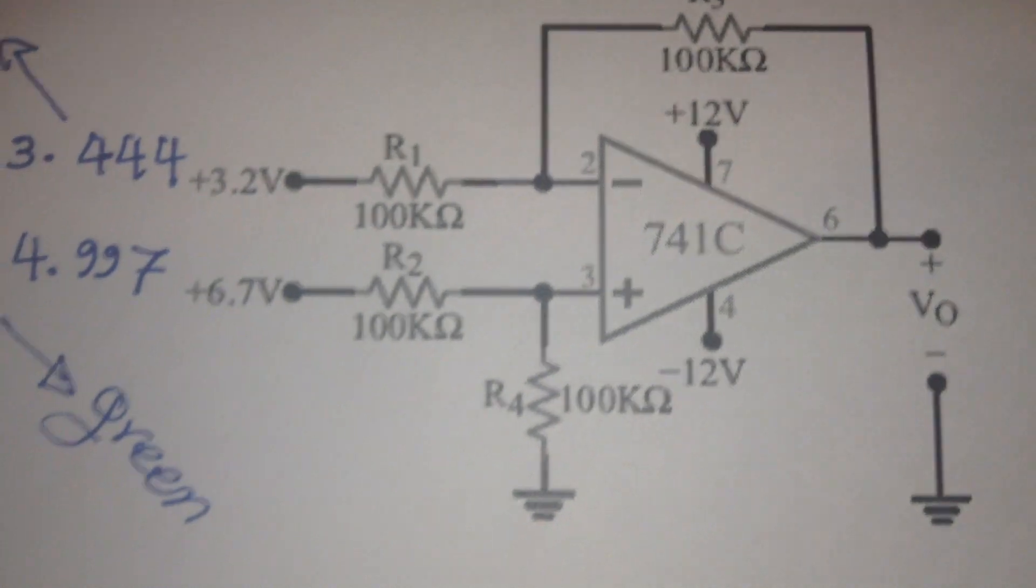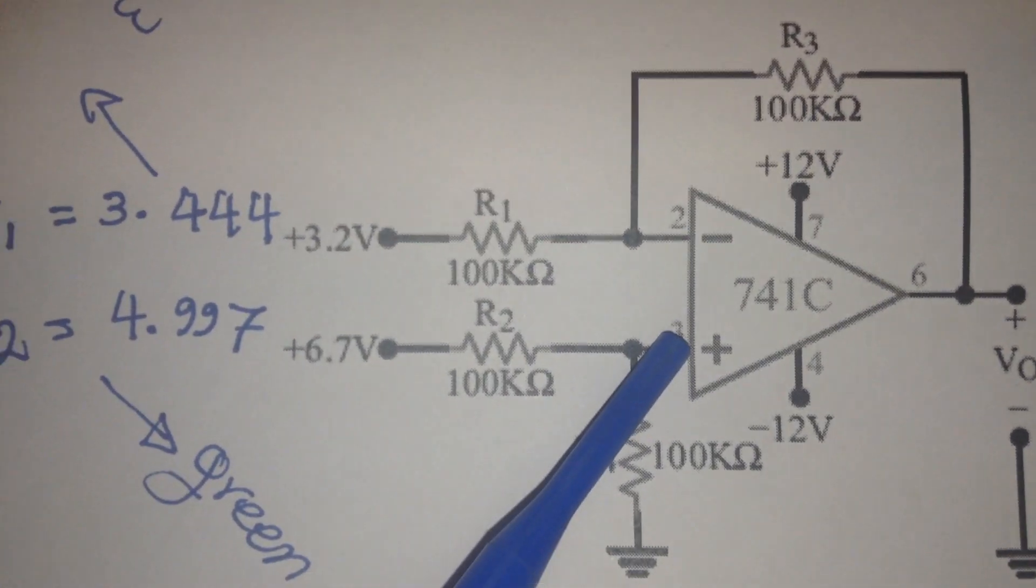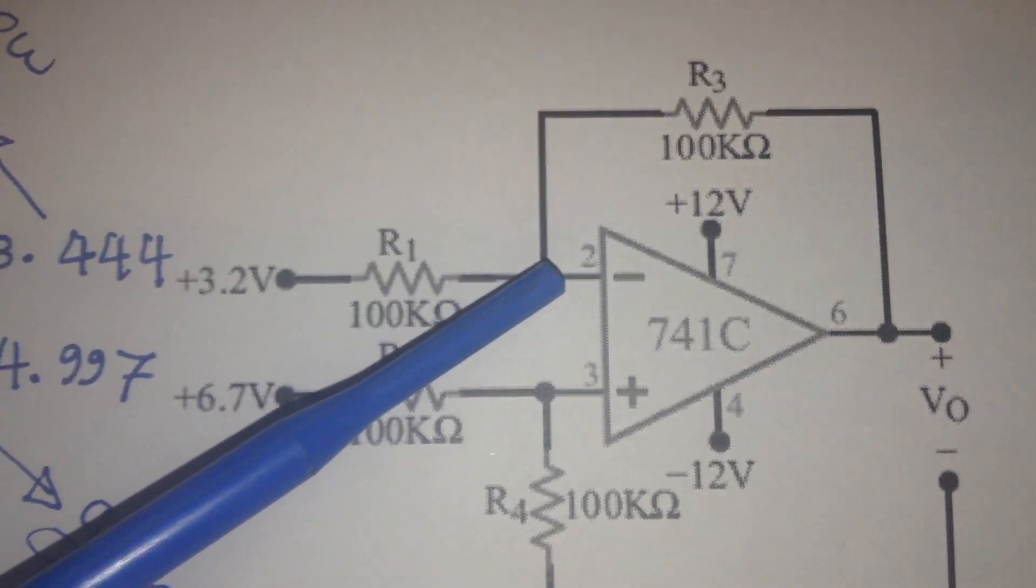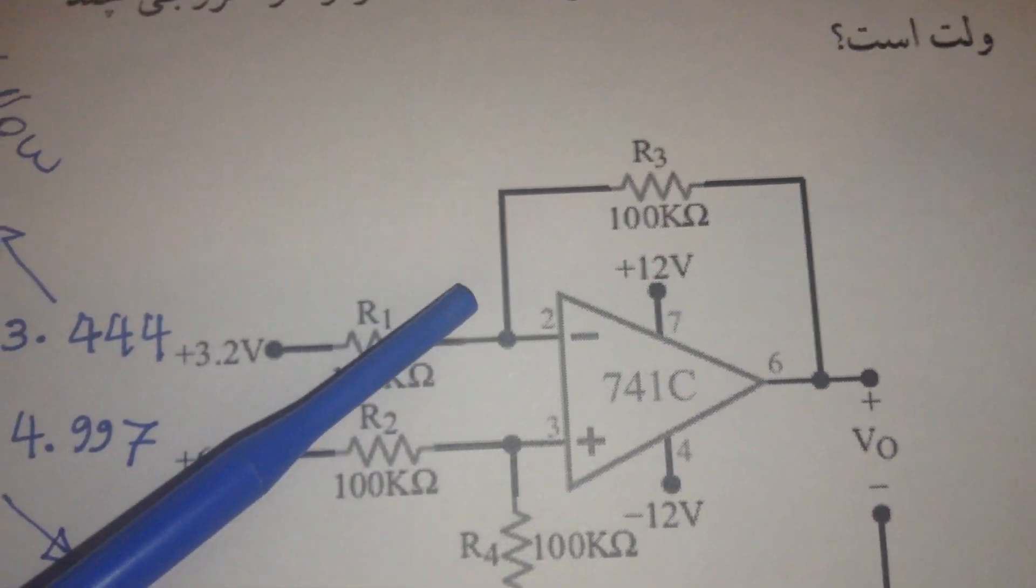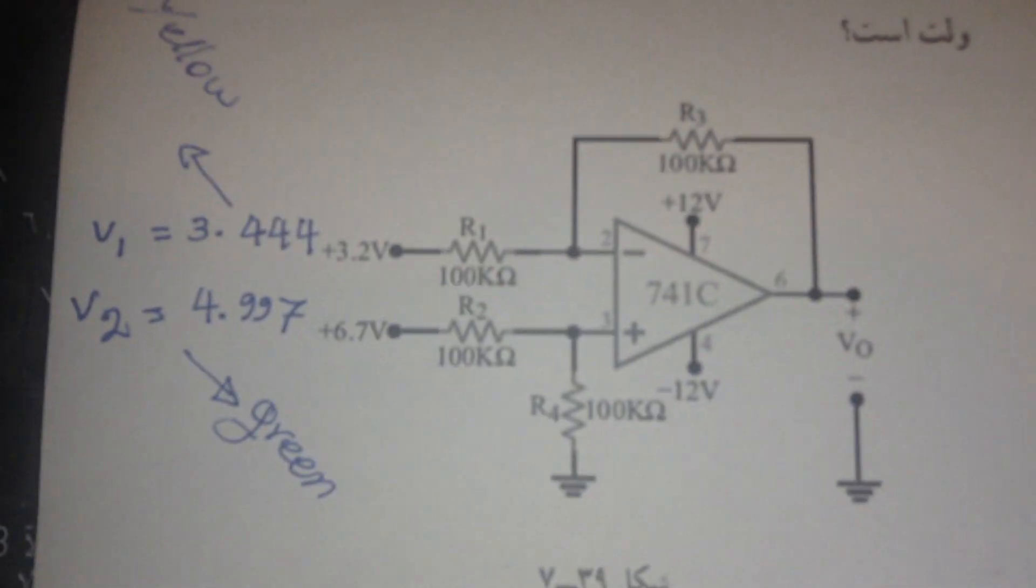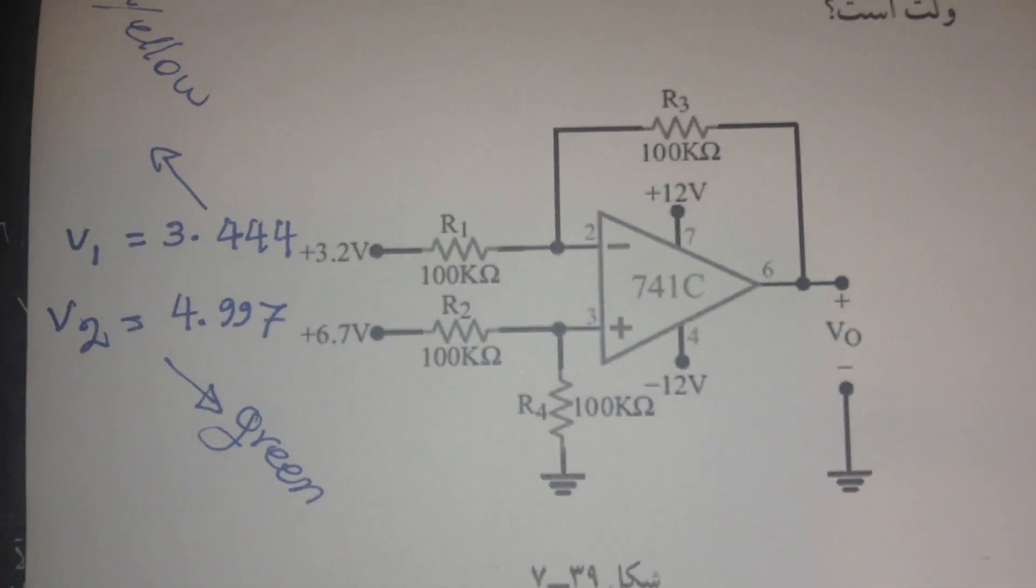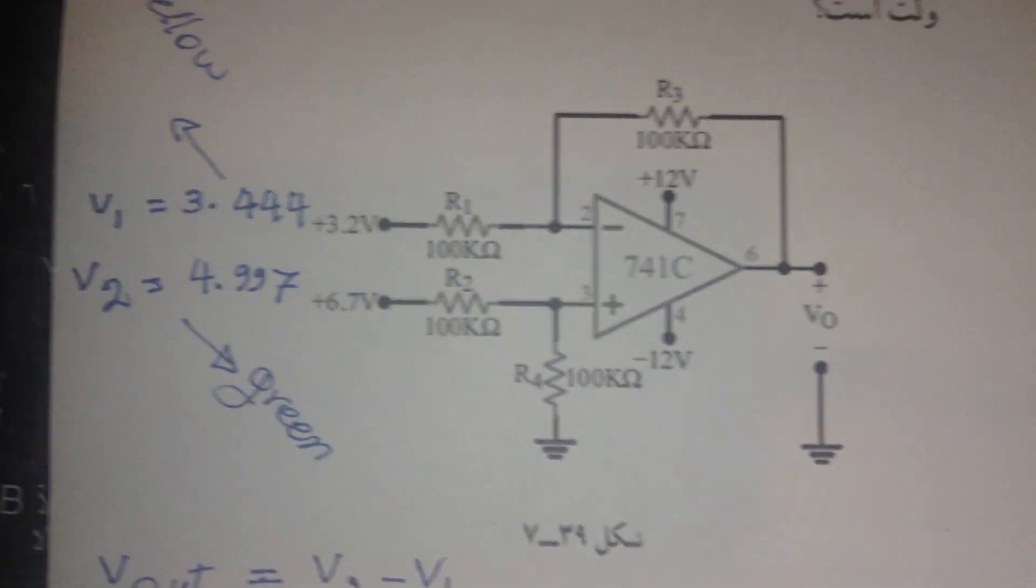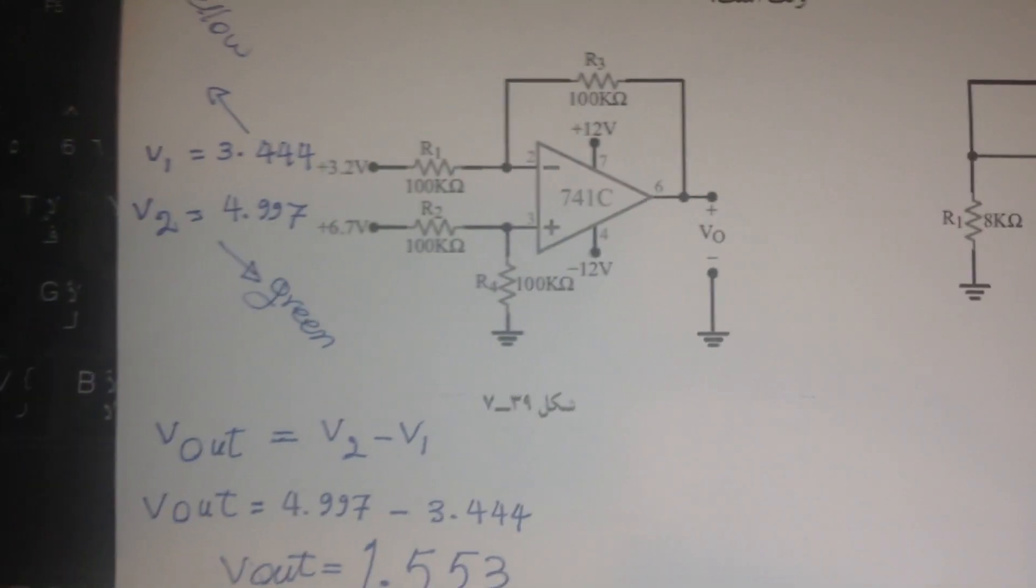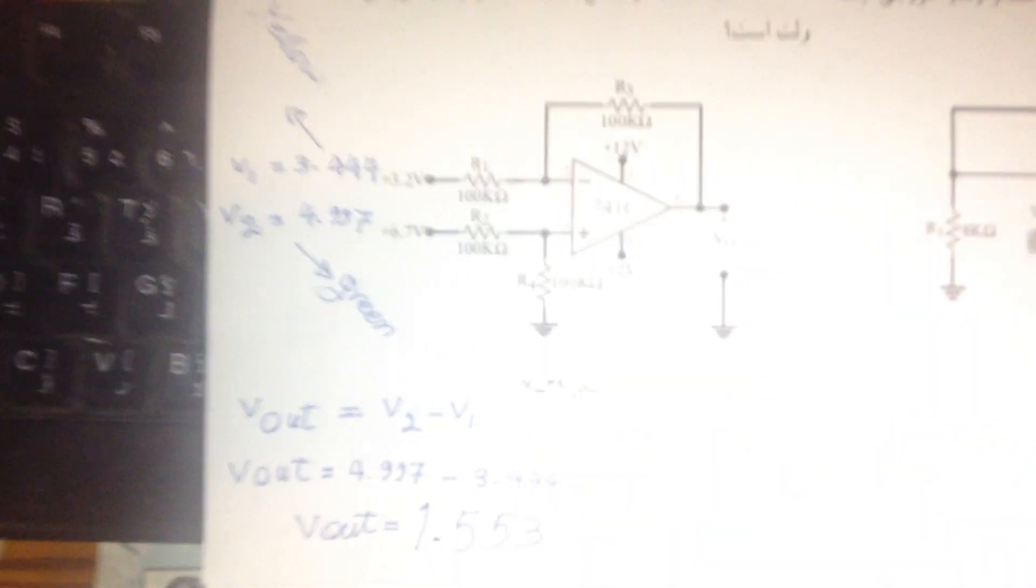When 5 volts is connected to pin 3 and 3.3 volts is connected to pin 2, with the negative feedback connected through a 100k ohm resistor, the output is V2 minus V1. This is a very useful operational amplifier exercise.